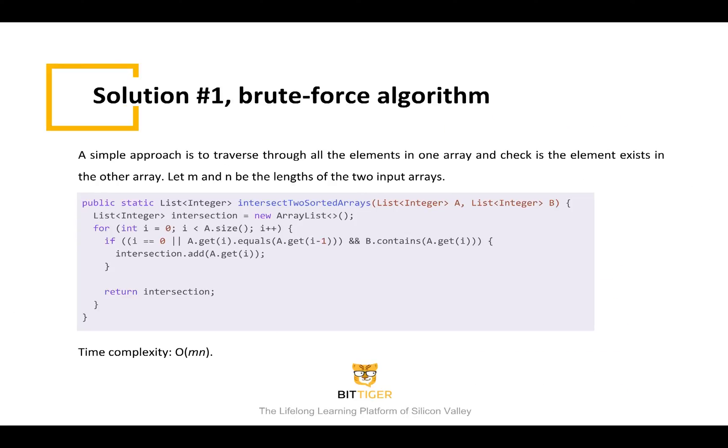Now, we can easily come up with a brute force method. In this algorithm, we iterate through all the elements in the first array, A. For each element in A, we check if it is also present in the other array, B. If it is, then the element is present in both arrays and we should put it into the intersection array.